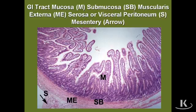Outside of the submucosa is the muscularis externa, which typically consists of alternating layers of smooth muscle arranged in either circular or longitudinal arrays.